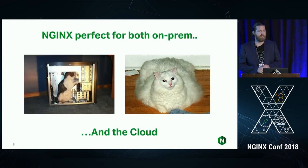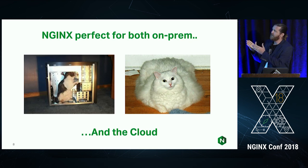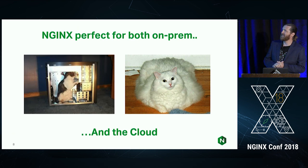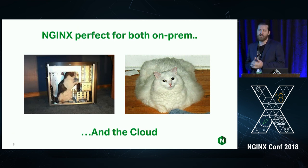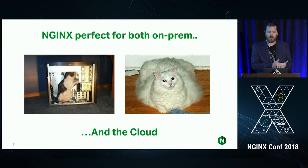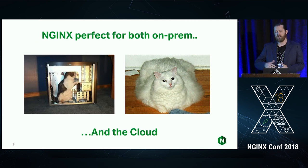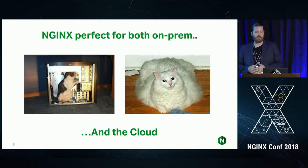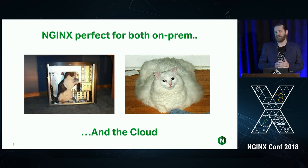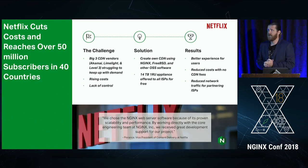NGINX is perfect for building a CDN — both on-prem and in the cloud. You can easily build a CDN anywhere: on an on-premise situation localized to your own data center, or as part of a multi-cloud strategy on Amazon, Google Cloud, or whatever cloud provider you decide. In that sense, it's agnostic.